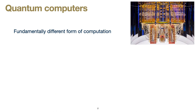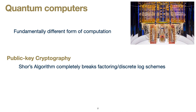Quantum computers — lots of money, time, and other resources are being spent these days trying to build computers which exploit quantum physics. Should these become a usable reality, they'll be introducing a form of computation which is fundamentally different than what we're used to, which will have various implications for the security of cryptographic algorithms. Perhaps the most commonly discussed is that Shor's algorithm for factoring and discrete log will completely break the security of much of today's public key cryptography.